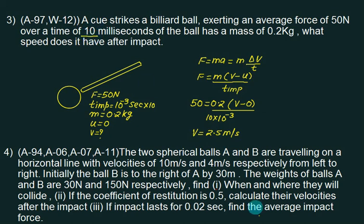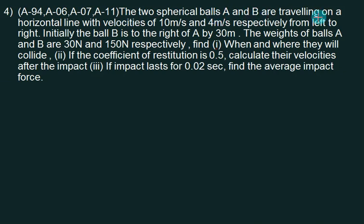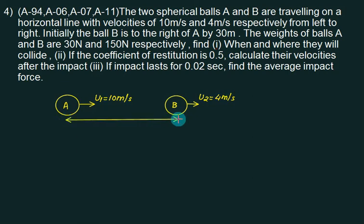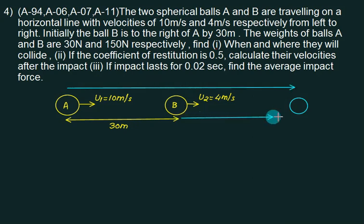Two spherical balls A and B are travelling on a horizontal line with velocities of 10 meters per second and 4 meters per second. Let's show ball A and ball B. This one is velocity U1 equals 10 meters per second. And this one is U2, velocity equal to 4 meters per second. They are travelling from left to right. But the initial distance between these two blocks is 30 meters. The balls collide at this point. What is the distance travelled by A? The distance travelled by B.